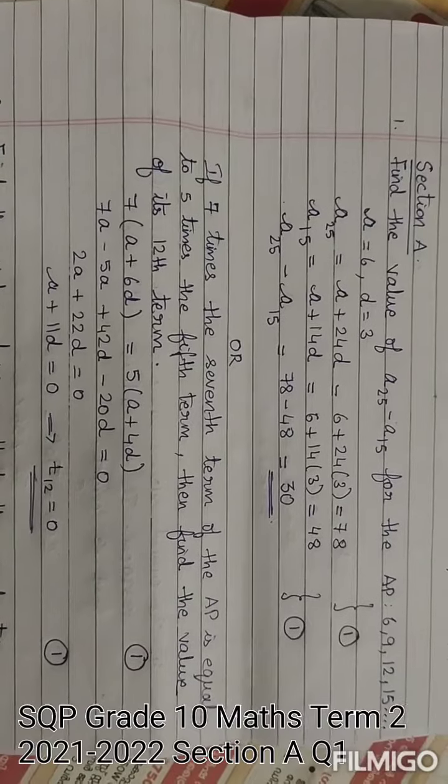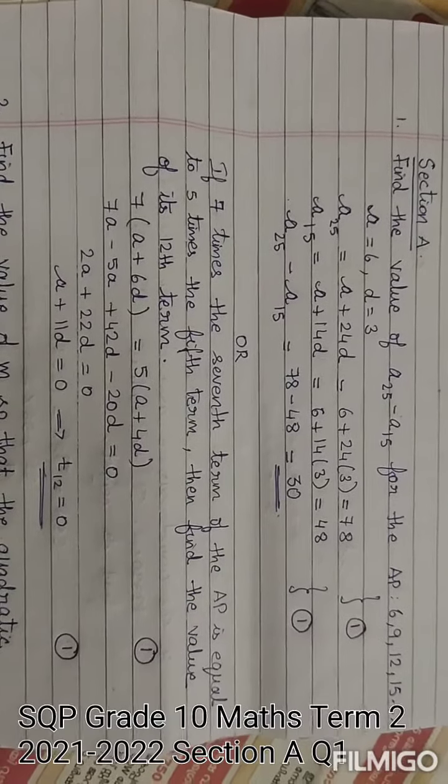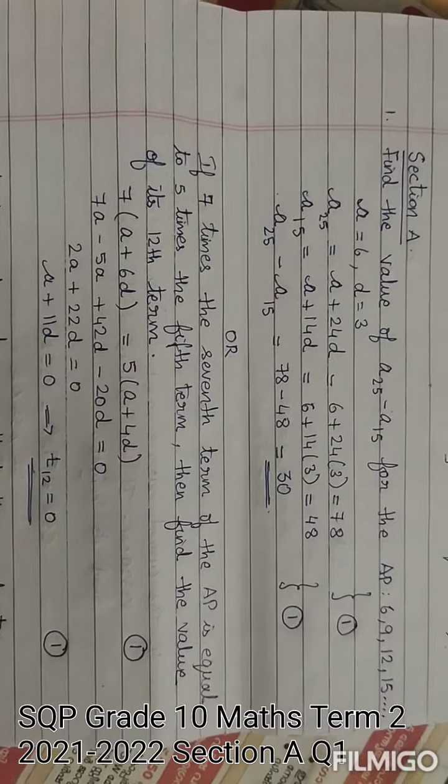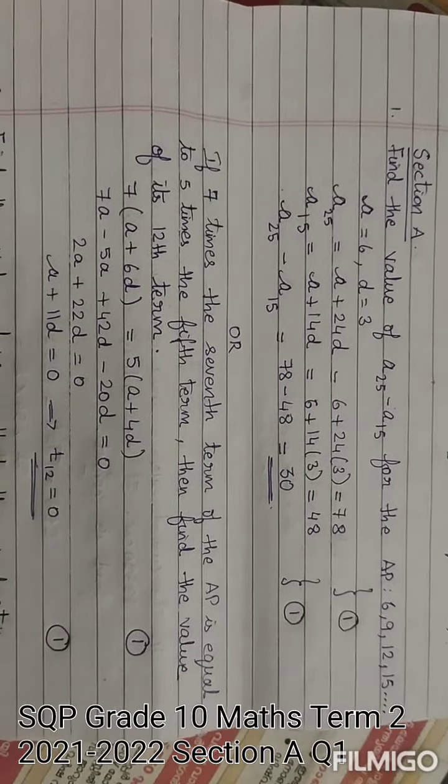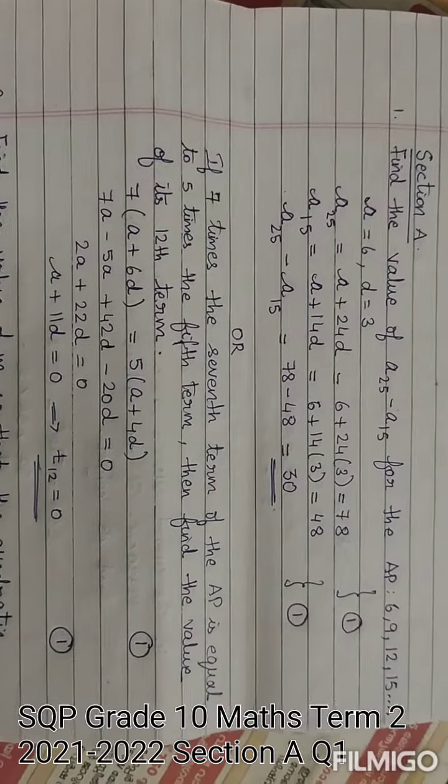And one internal choice question is there. If 7 times the 7th term of the AP equals 5 times the 5th term, then find the value of its 12th term.